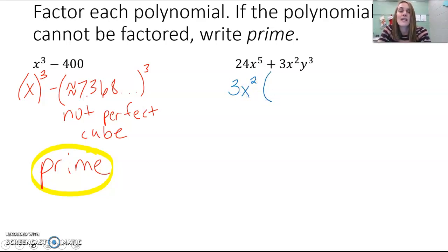So if I factor out 3x squared, 24 divided by 3 is 8, x to the fifth divided by x squared is x cubed, plus 3 divided by 3 is 1. I don't need to write the coefficient of 1 though. x squared divided by x squared, that's gone. I do have y cubed though left over. So now I have 3x squared times 8x cubed plus y cubed. Now, you still want to look at what you have left over after factoring out the greatest common factor to see if you can factor it more.